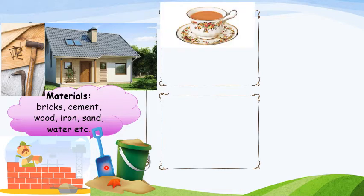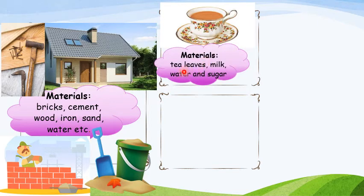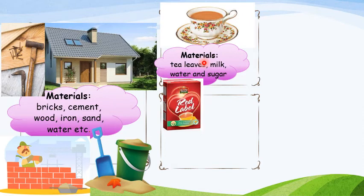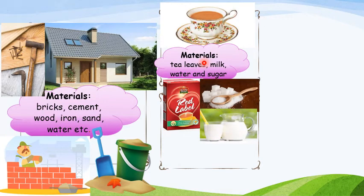Now, see the next picture. This is what? Tea. Yes. So what are the materials required for making tea, children? Tea leaves, milk, water, and sugar. With the help of these things — tea leaves, milk, water, and sugar — we make tea. This is the packet of tea leaves, sugar, and milk. These are the materials we need for making tea.